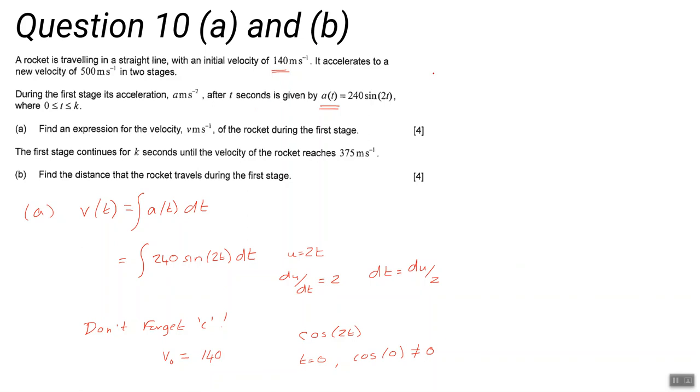Part b: the distance traveled during the first stage. Well, the distance traveled uses the fact that the distance traveled is the integral of the velocity with respect to time.